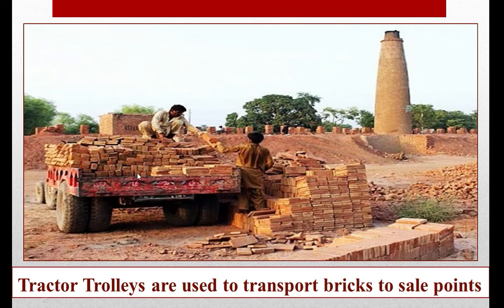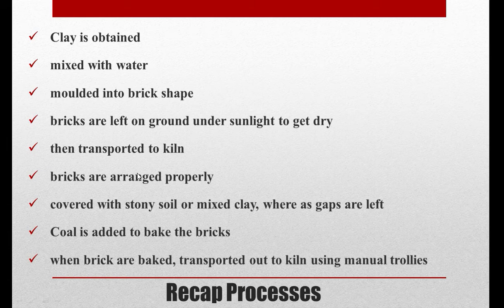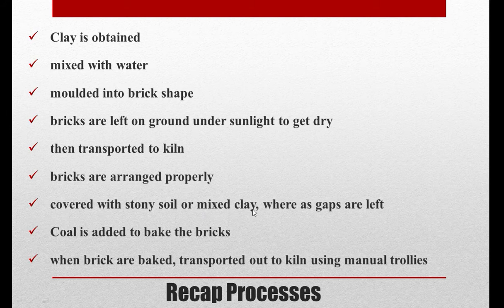To recap the process: clay is obtained and mixed with water, molded into brick shapes, and left on the ground under sunlight to dry. The dried bricks are then transported to the kiln, arranged properly in columns, and covered with stony soil or mixed clay while gaps are left. Coal is added to bake the bricks through these gaps. When baked, the bricks are transported out of the kiln using manual trolleys.